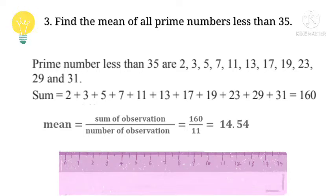Now mean formula is sum of observations upon number of observations. First we find the sum: 2 plus 3 plus 5 plus 7 plus 11 plus 13 plus 17 plus 19 plus 23 plus 29 plus 31 equals 160.